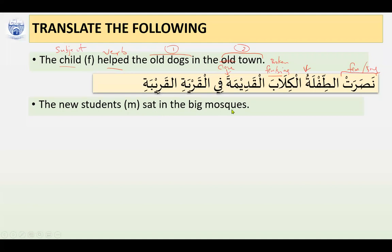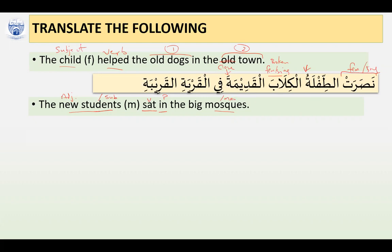'The new student sat in the big mosque.' Let's analyze this. First, we need to identify the type of sentence. It's a verbal sentence because 'sat' is a verb. Who sat? The students — so this is the subject. At the same time, the word 'students' is a described noun and 'new' is an adjective, so we have an adjective-noun construction. 'In the big mosque' — 'in' is a preposition, and 'big mosque' has mosque as the described noun and 'big' as the adjective.